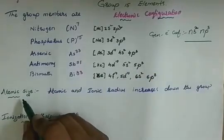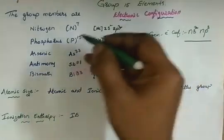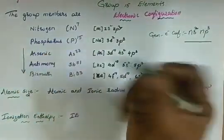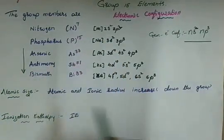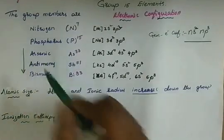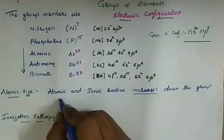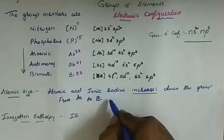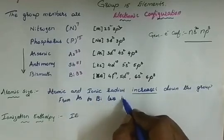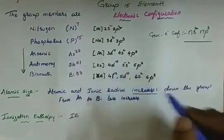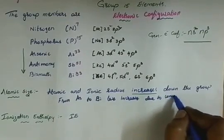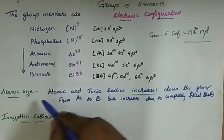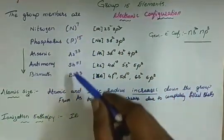Coming to the atomic size trends: from top to bottom — from nitrogen to bismuth — atomic size increases. Especially from arsenic to bismuth, the increase is less, due to completely filled shells. Atomic size, ionic radii, and atomic mass all increase down the group.